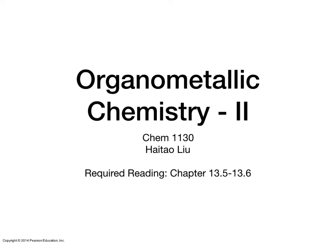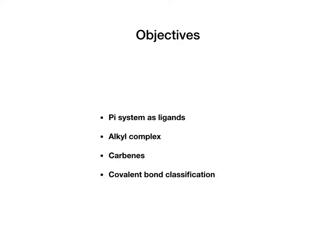I hope you had a great holiday. Our goal today is to continue our discussion from last week on organometallics. This is the second part. We will focus on a couple of things: we're going to go through three additional ligands. The first is a pi system, the second is alkyl, and the third is carbenes. After that, we're going to go over a concept called covalent bond classification, which is a way to provide more insight into the type of bonding between the ligand and metal.